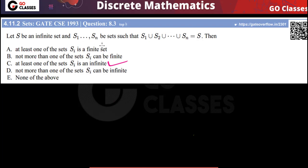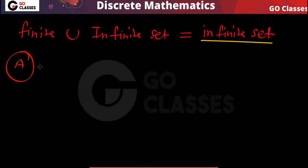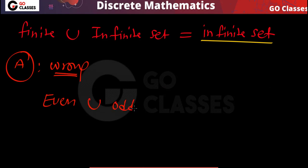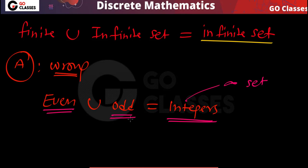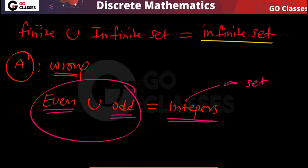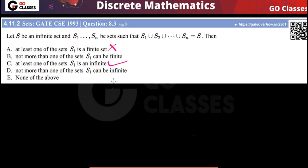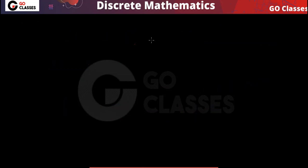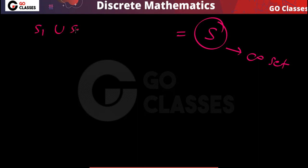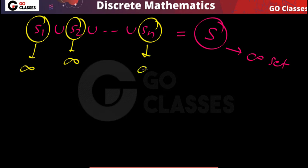Option A says at least one of them must be finite — this is wrong. For example, take the set of all even numbers union the set of all odd numbers. The result is the set of all integers, which is infinite. Both sets are infinite, so it is not necessary that at least one is finite. All of them can be infinite.